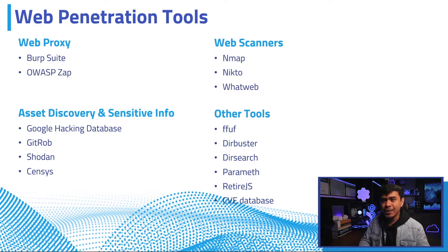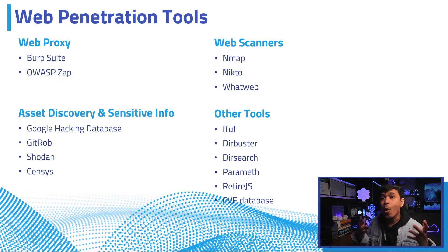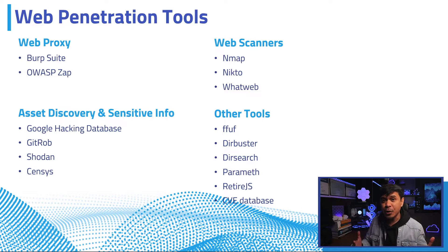For web scanners: first, Nmap is a tool not specifically for web but is still the best option for initial web deep scanning. We also have Nikto, and WhatWeb is another vulnerability scanner dedicated for web applications — it scans dangerous files, CGIs, outdated server software, JavaScript libraries, web servers, and other web-related issues. As a web penetration tester, you also need to know how to do Google Dorking, or Google Hacking. We use the Google Hacking Database to find publicly available web security-related information.